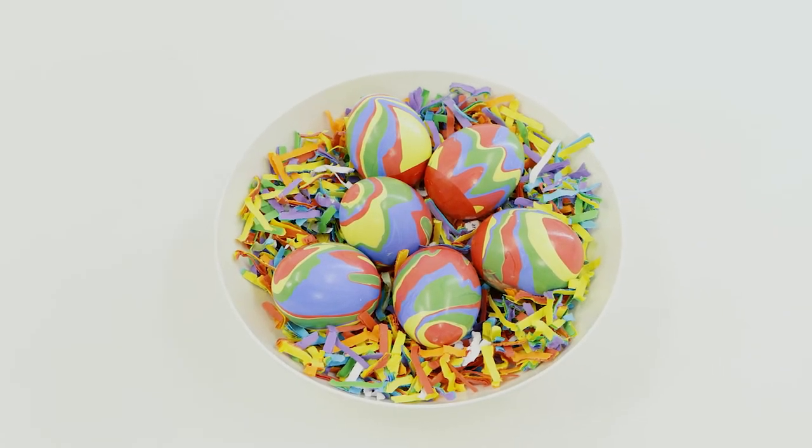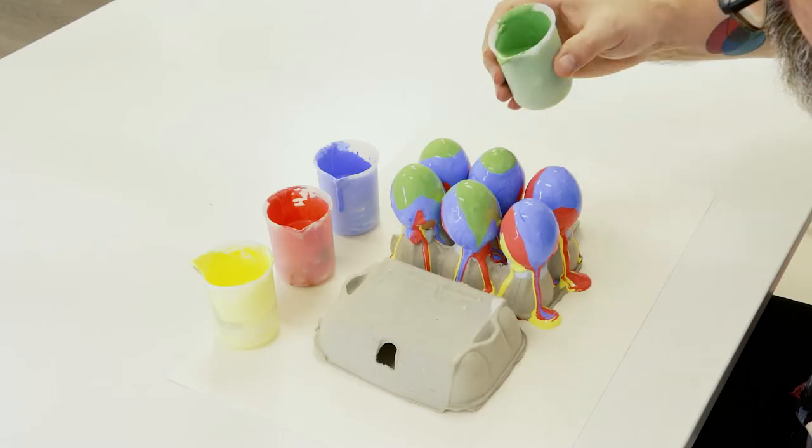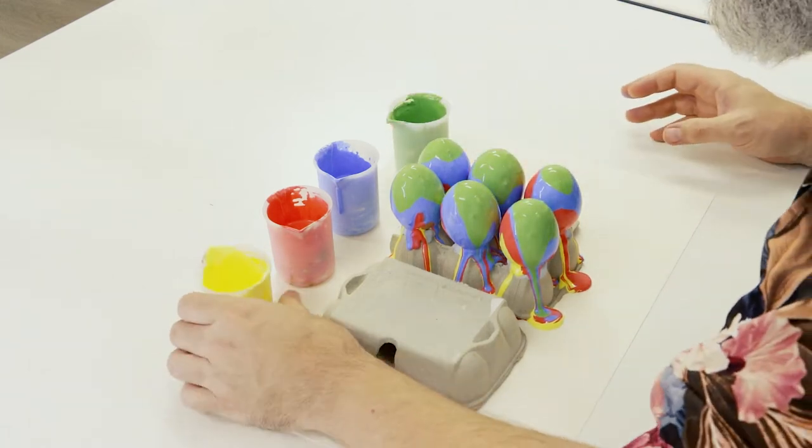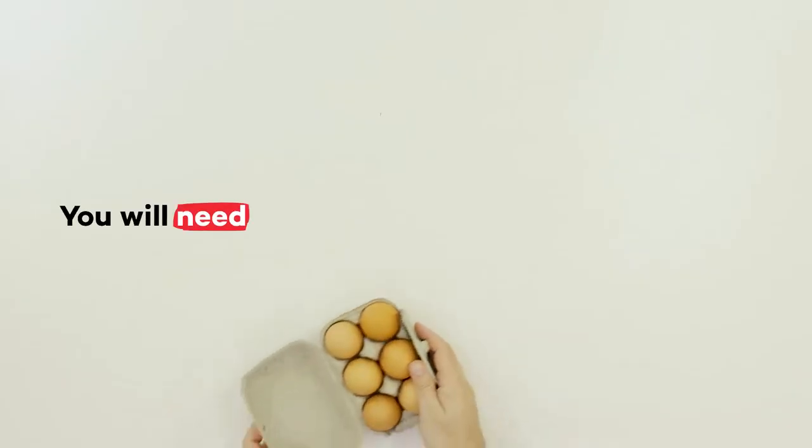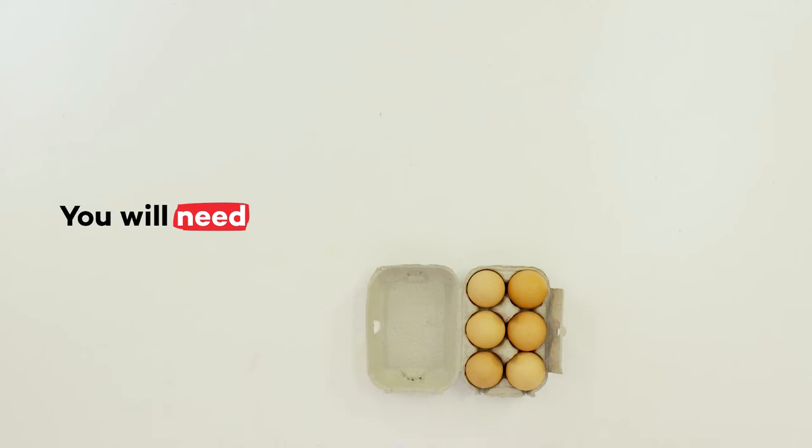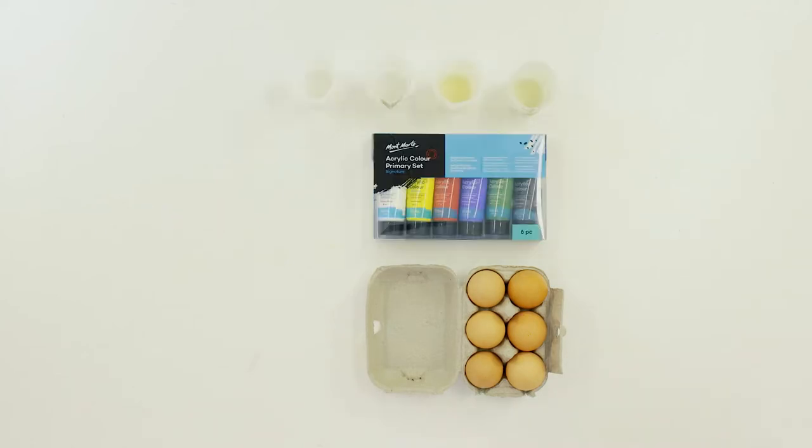If you love pouring art you're going to have lots of fun with this project. So let's get into it. For this you will need six boiled eggs, four small cups, the acrylic colour primary set, some blue tack, some acrylic flow medium or pouring medium, some paper towels and a palette knife to mix our paint.